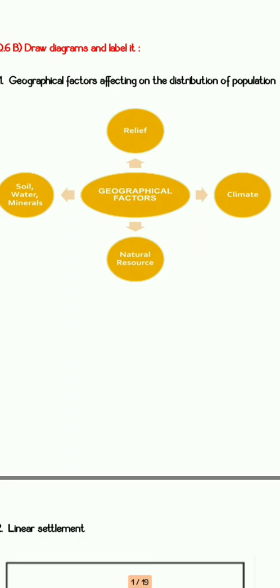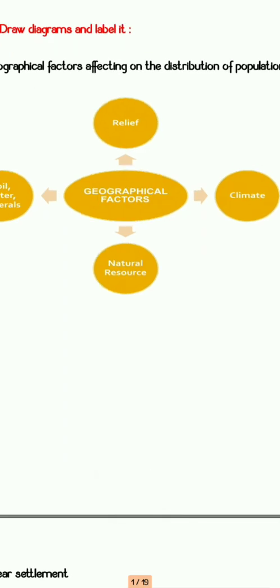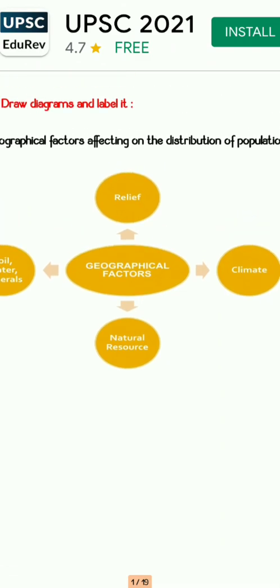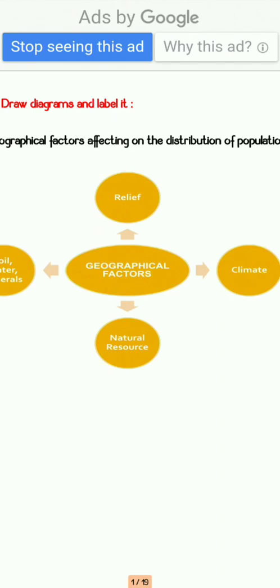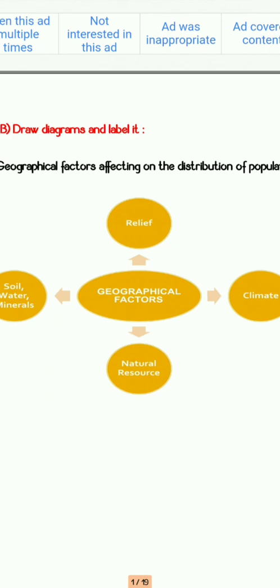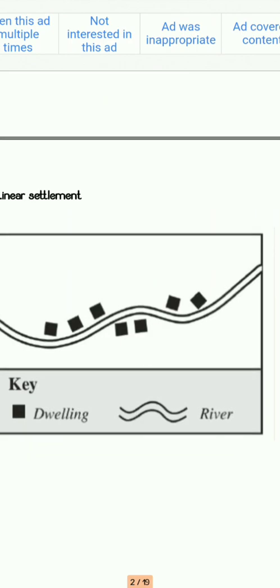As you have already studied this topic, you know which geographical factors affect the distribution of population. It includes climate, relief, natural resources, natural calamities, and war conditions. All these things are responsible for the population to migrate or change. If a diagram is not available in your book, you can give a diagrammatic representation for your answer.